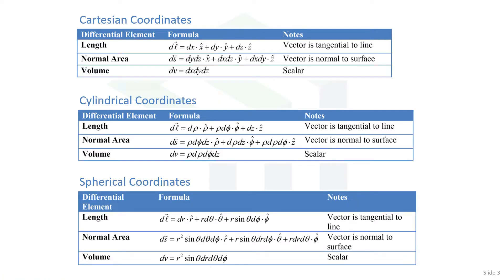I won't spend too much time on this slide. This is a summary of everything we're going to talk about in this video, and you can come back to the PDF and have access to it. It's a summary of the differential length, area, and volume for each of the three coordinate systems. Let's move on.